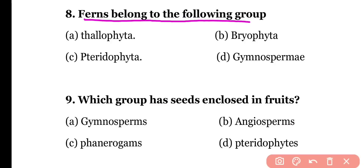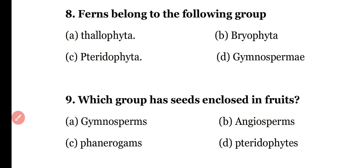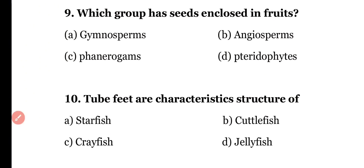Question number eight: fern belongs to which of the following groups — (a) Thallophyta, (b) Bryophyta, (c) Pteridophyta, or (d) Gymnospermia? The correct answer is option C — fern is a pteridophytic plant.